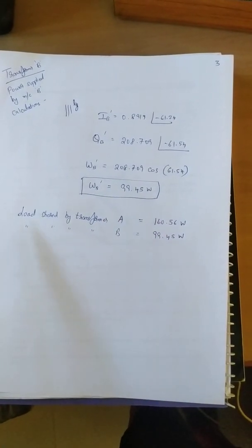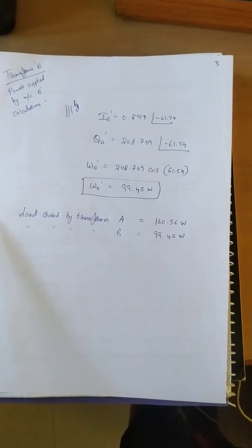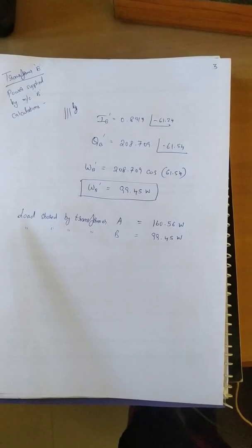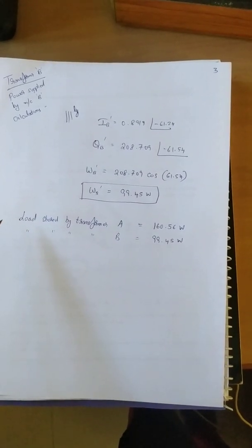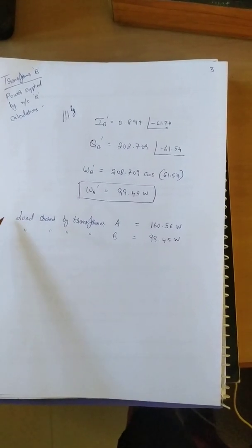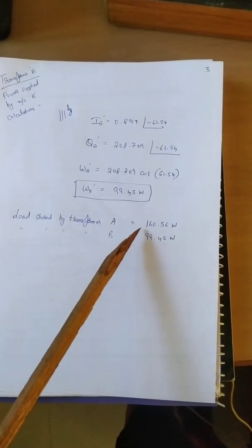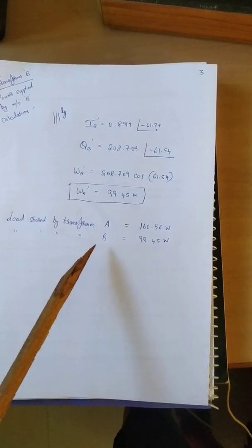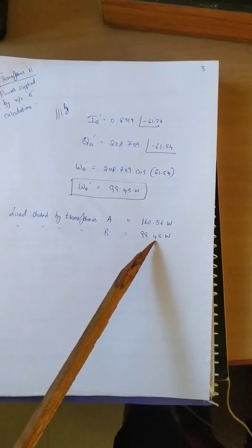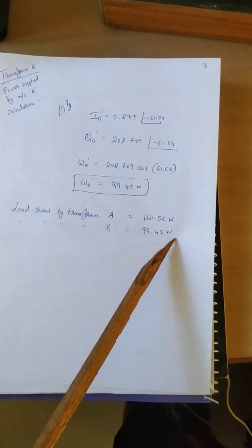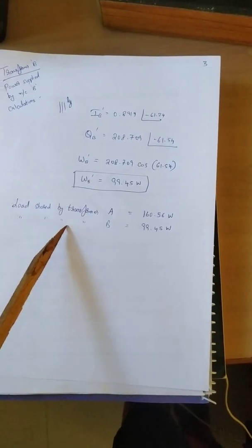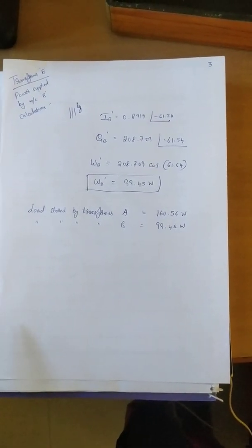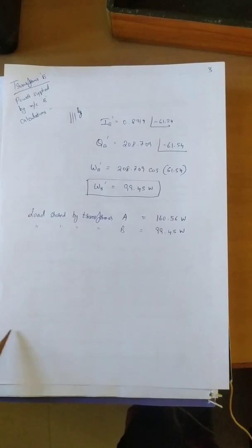After doing these calculations we come to a conclusion that for this particular load, for the current of 2 amperes which is the specimen that we have selected for this calculation, load shared by the first transformer of 2 kVA rating is 160.56 watts and load shared by second transformer of 1 kVA rating is 99.45 watts. Similarly, load shared by Transformer A and Transformer B for all the readings have to be calculated. This finishes the calculation specimen calculations for this experiment.